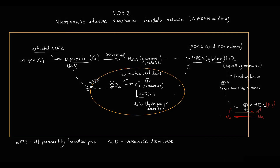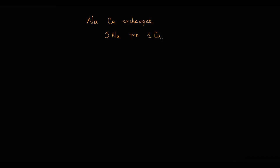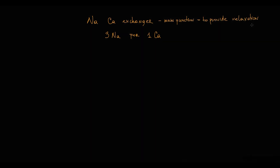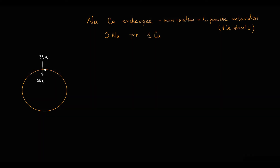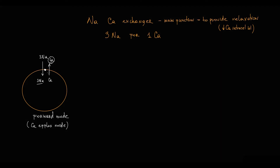Also, with stimulation of the sodium-hydrogen exchanger, more sodium ions enter the cell, causing an increase in intracellular sodium concentration. The crucial feature is that an increase in intracellular sodium level affects the function of the sodium-calcium exchanger. The sodium-calcium exchanger transports three sodium ions for one calcium ion across the sarcolemma of cardiomyocytes. Its main function is to provide relaxation of cardiomyocytes — relaxation occurs when intracellular calcium levels decrease. So the sodium-calcium exchanger transports three sodium ions into the cell for one calcium ion that leaves the cell. This activity, when it transports sodium in and calcium out, is called forward mode, or calcium efflux mode.